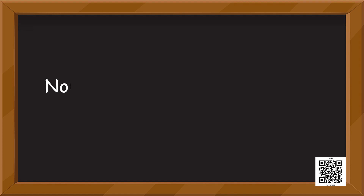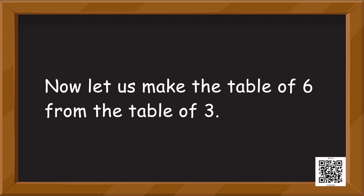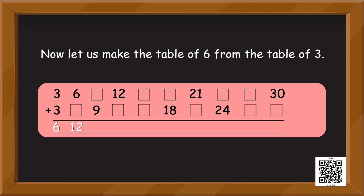Rudra has created the table of four by using the table of two — this is interesting. Now let us make the table of six from the table of three. Can you try it on your own? Three plus three is six — go till the end. The table of three taken two times will give you the table of six.